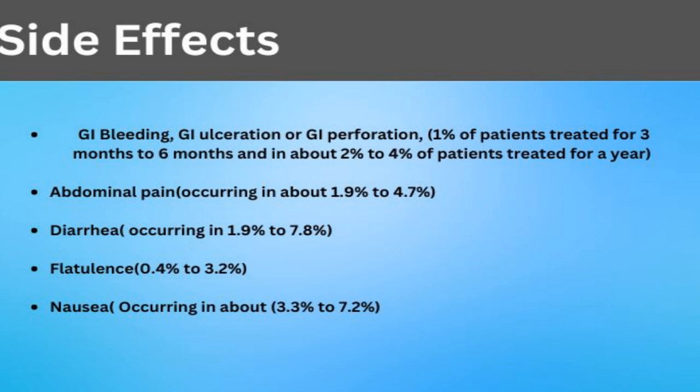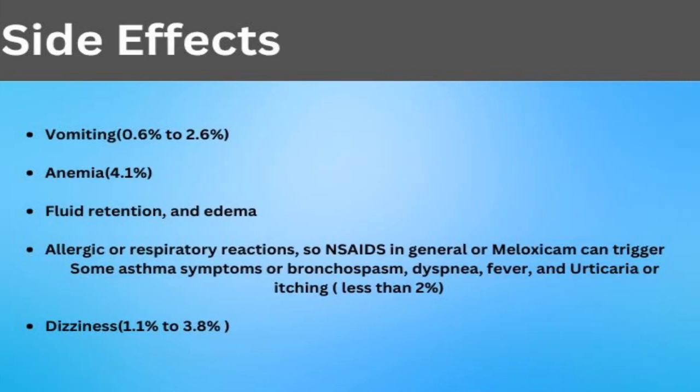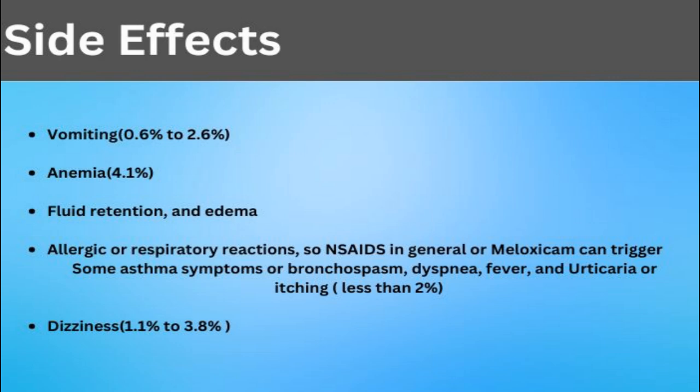Other side effects include abdominal pain, diarrhea, flatulence, nausea, vomiting, anemia, and fluid retention or edema. There are also reports of allergic and respiratory reactions — NSAIDs in general, including meloxicam, can trigger asthmatic symptoms like bronchospasm and dyspnea. Fever, itching, and dizziness have also been reported.